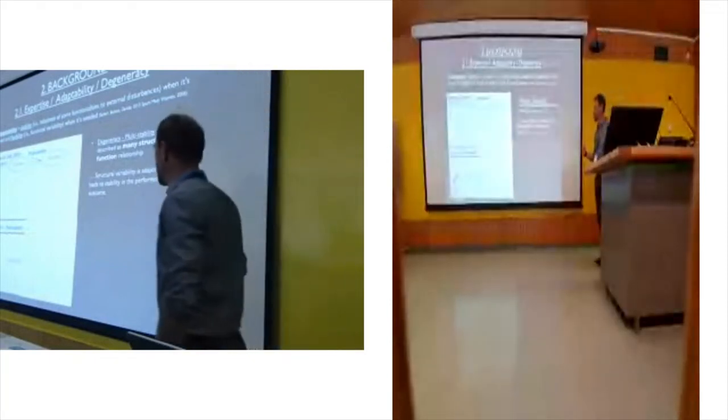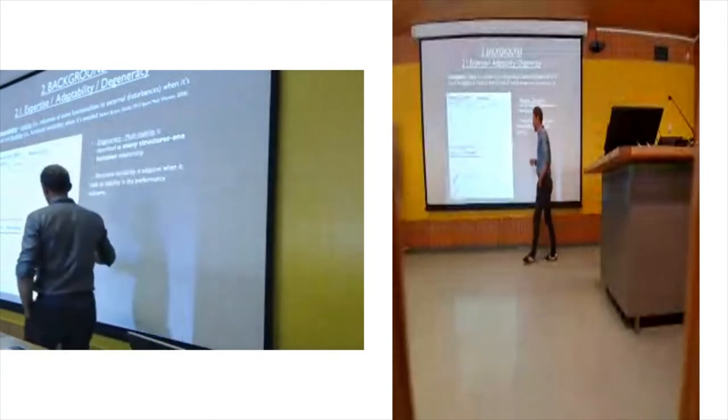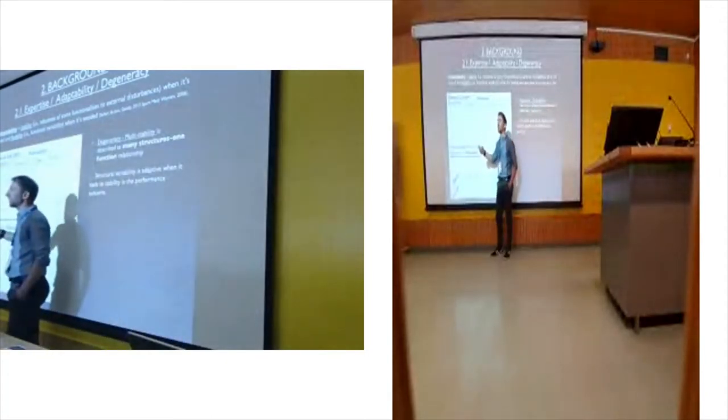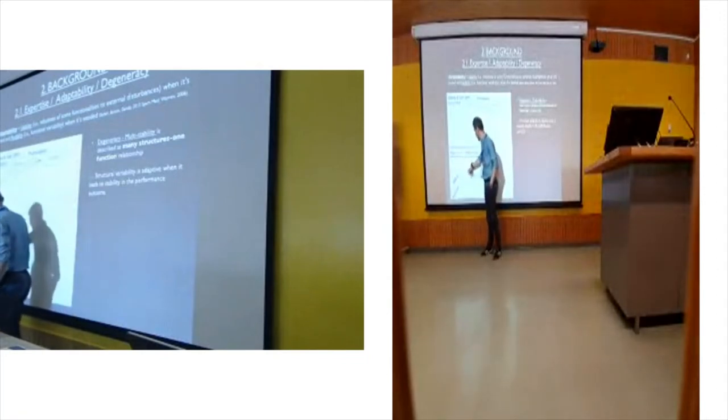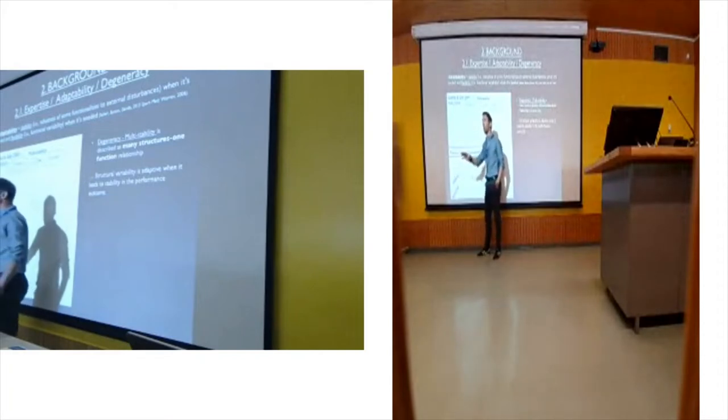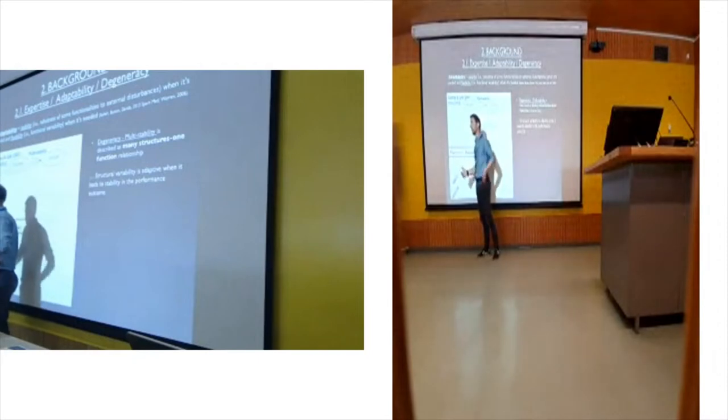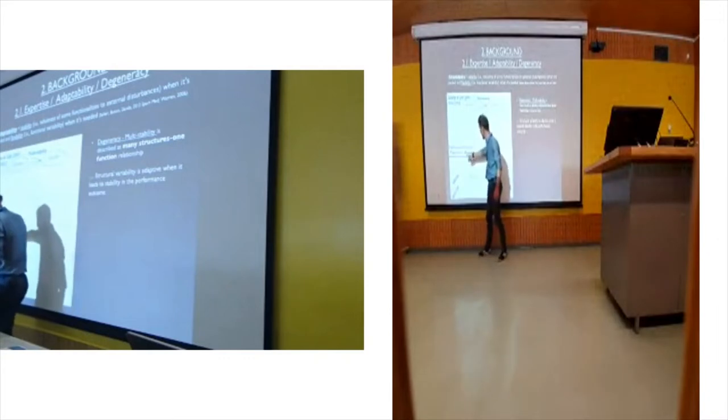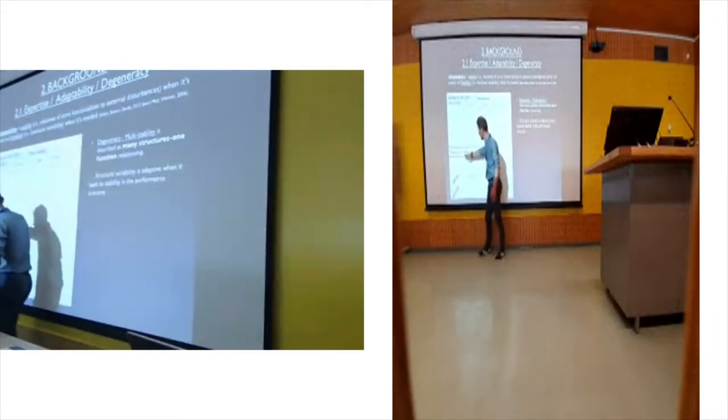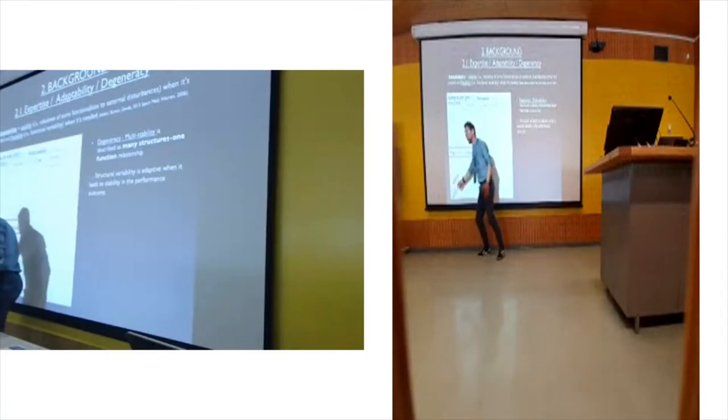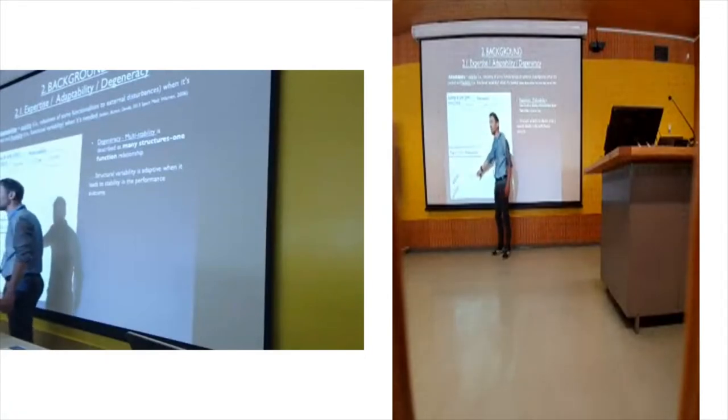What they are saying is to achieve this function, we can have different neurons to do it. One neuron could achieve it if it's its main function, but some other neurons which are not dedicated to do it can adapt what they do to achieve the same function. So degeneracy is just kind of multi-stability - multiple structures can achieve the same function.